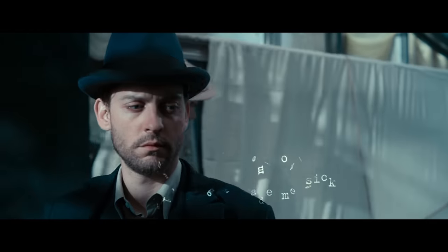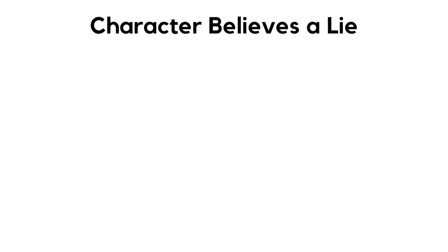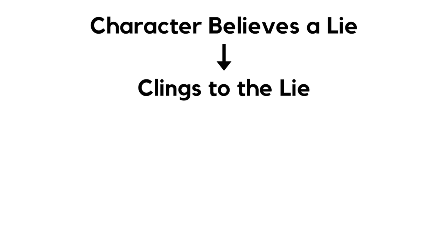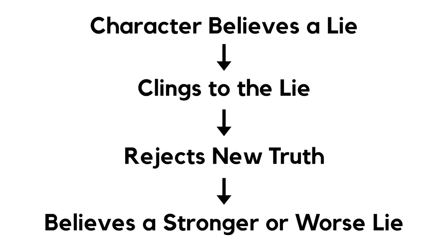Writing a disillusionment arc will work very similarly to the positive change arc. It can be helpful to nail down the exact lie the character believes and the dark truth it will come to understand — this will give you a launching point to begin your story or a way to find and solve story problems. In a fall arc, the character will have a fatal flaw or lie just like the positive change arc, but instead of finding the truth and accepting it, the character will fall further into the darkness of the lie, usually ending in self-inflicted destruction. Simply put: the character believes a lie, clings to the lie, rejects the truth, and finally believes a stronger or worse lie.